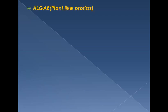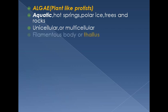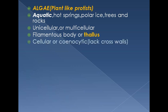We now move on to plant-like protists, which are algae. Algae are aquatic; they may be found in hot springs, on trees (called epiphytes), and on rocks. They may be unicellular or multicellular and have a filamentous body — a simple body called a thallus. A thallus is a simple plant body that cannot be differentiated into root, stem, and leaves.